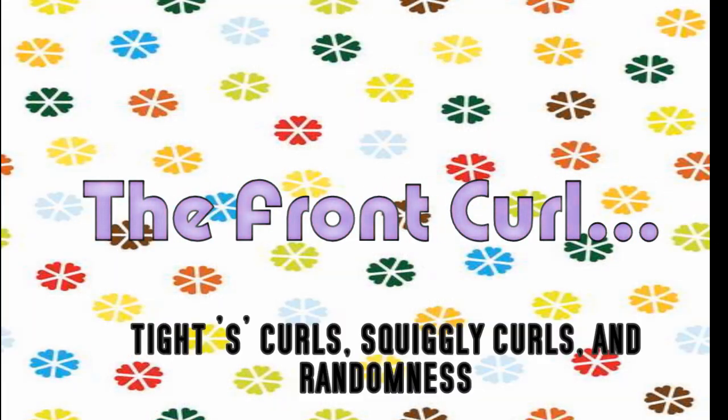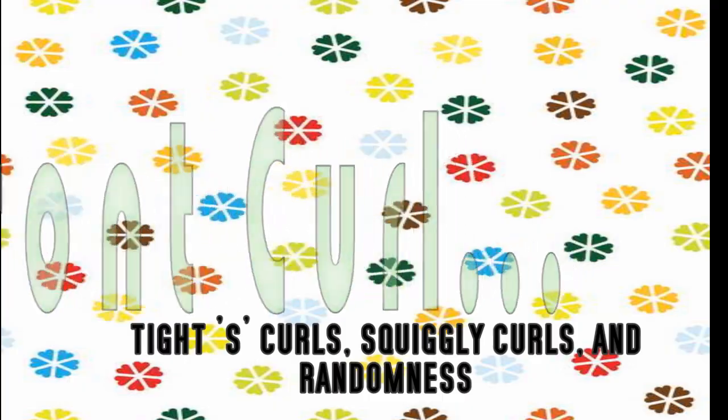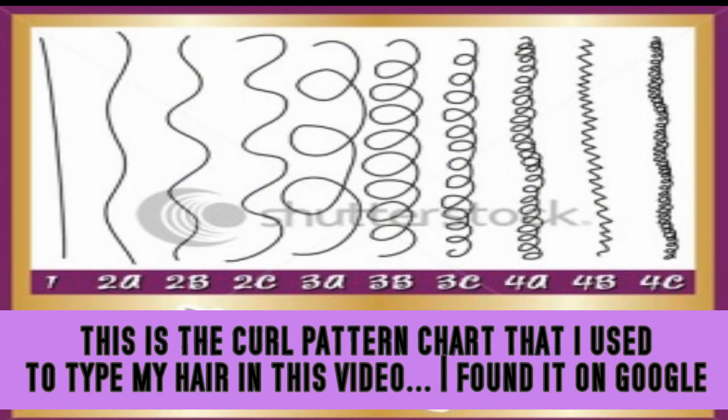The front of my hair has to be the least defined curls on my head. I want to say it's like a kinky 2C because it's more like an S-curl in the front — not really coils. It's a zig-zag but a looser zig-zag than on the curl pattern chart. But this is the front.